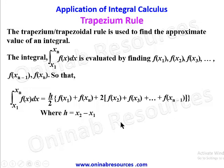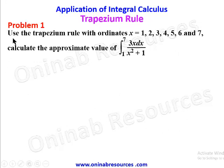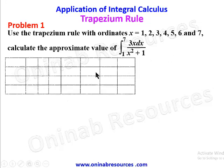We'll now look at solving some problems on the trapezium rule. Problem one: use the trapezium rule with ordinates x = 1, 2, 3, 4, 5, 6, and 7 to calculate the approximate value of the integral of 3x/(x² + 1) dx from 1 to 7. In the solution we are going to create a table of values.